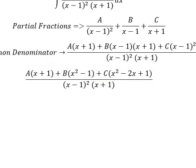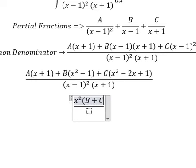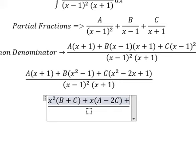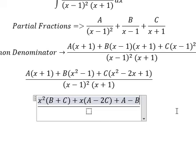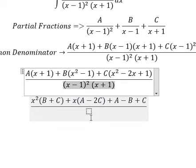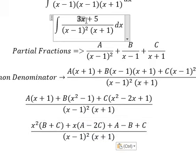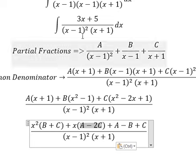And now we need to arrange based on the term of x. For x squared, we will put b plus c. For x, we will have a minus 2c. For the number, we have a multiplied by 1, so we have a minus b plus c. Now we look at the coefficients. We have 3x, that means a minus 2c equals 3.